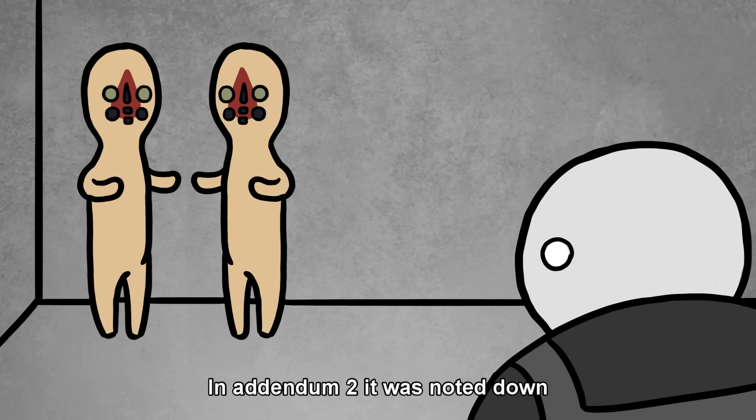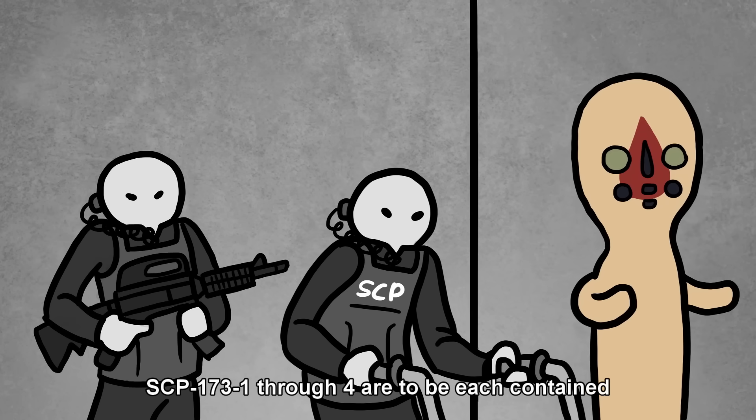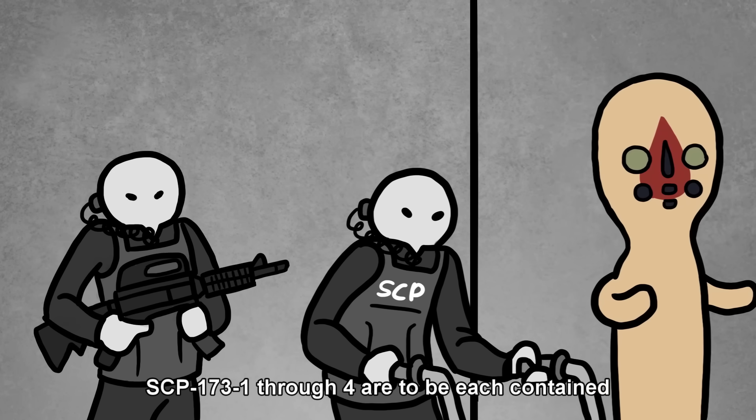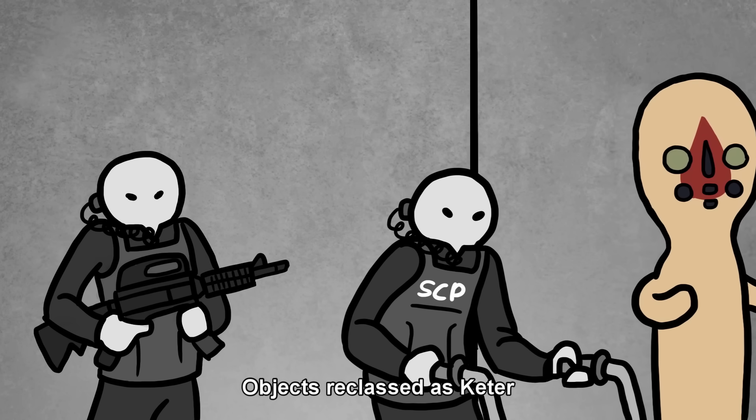In Addendum 2, it was noted that a second multiplication event occurred. SCP-173-1 through 4 are to be each contained as per original containment procedures. Objects reclassed as Keter.